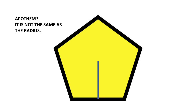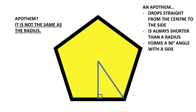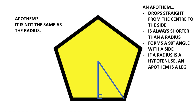That is what an apothem is. Since it hangs straight down to the side like that, it forms a 90-degree angle with the side. Every apothem always hits a side of the shape at a 90-degree angle. It drops straight from the center to the side, so it's going to be shorter than a radius — that diagonal has got to be longer than the apothem. If you put the radius back in there, the apothem is acting like a leg of a right triangle, and the radius is acting like a hypotenuse. The apothem is the leg and the radius is the hypotenuse.